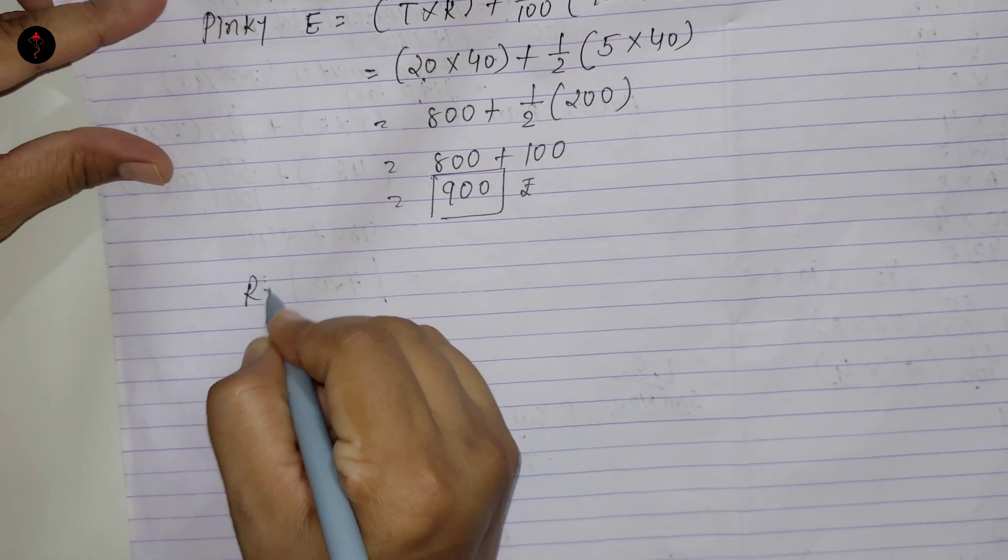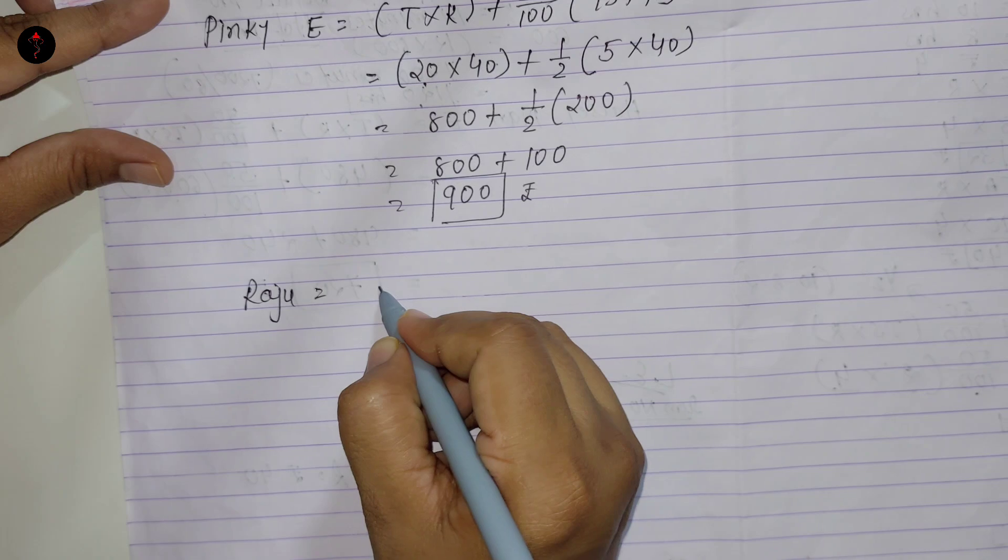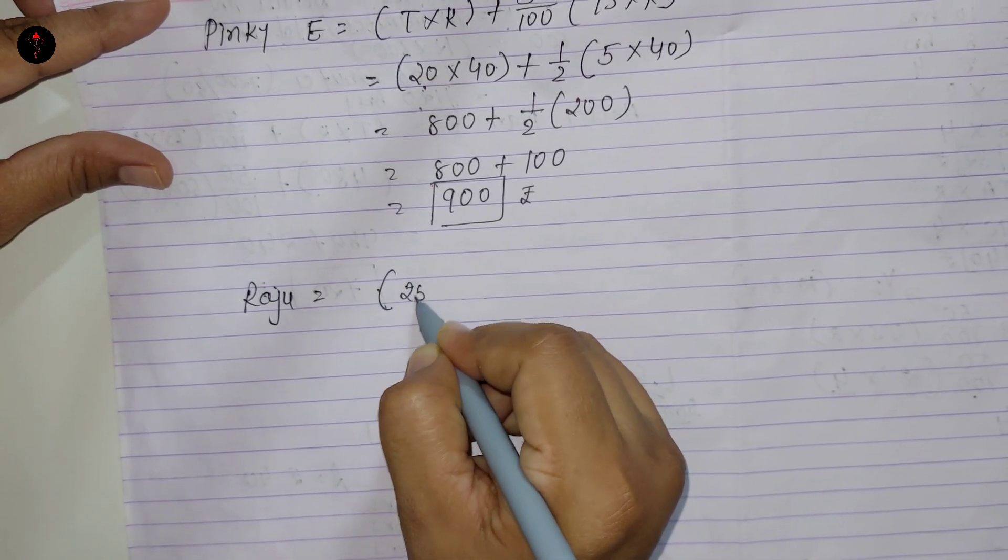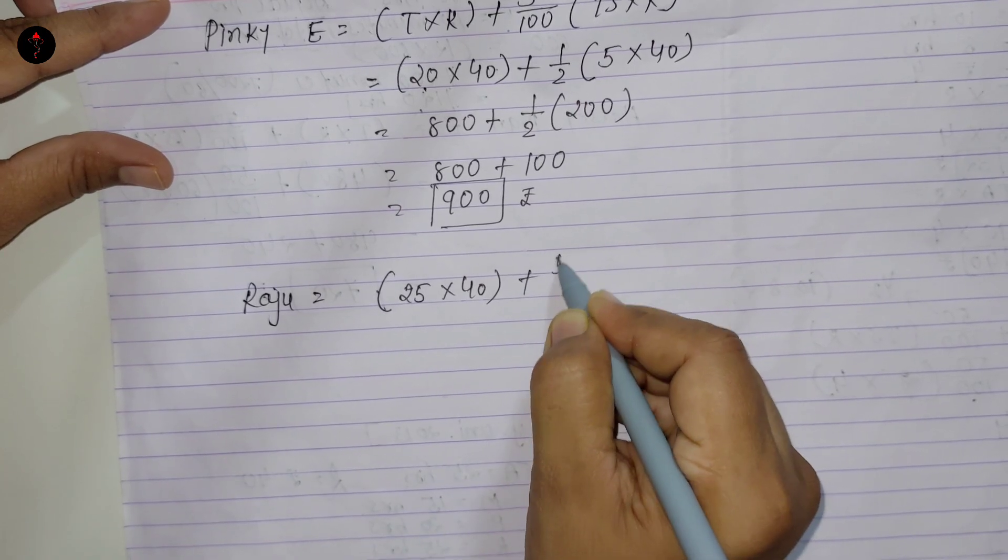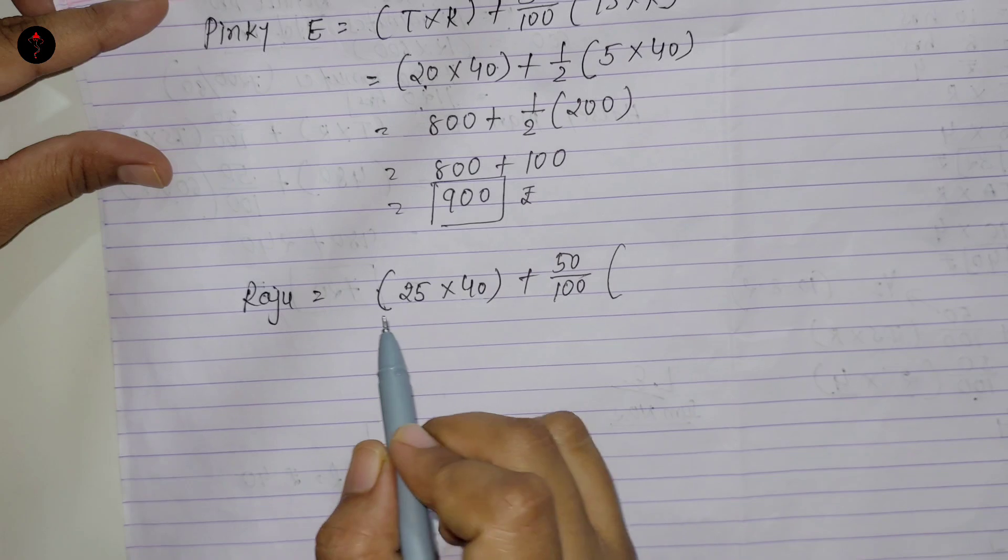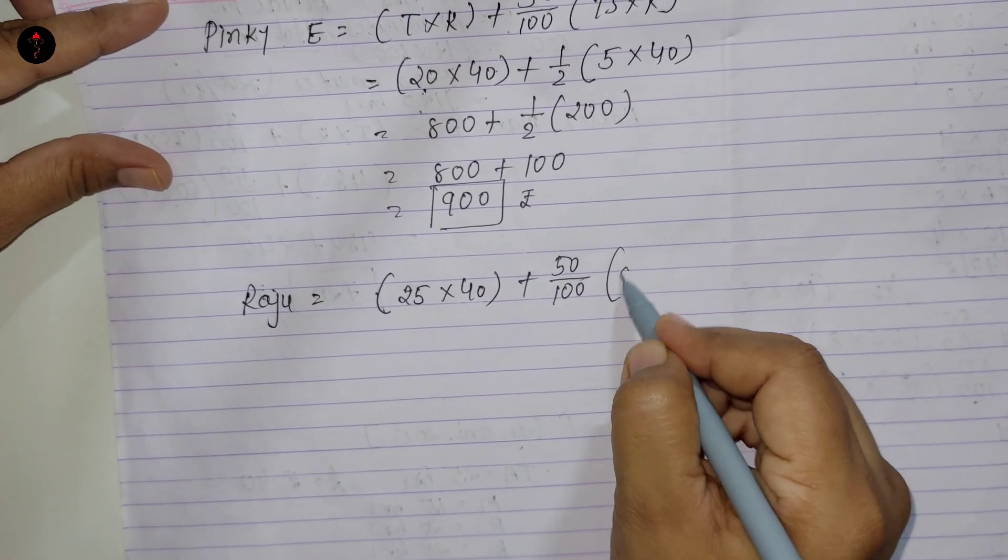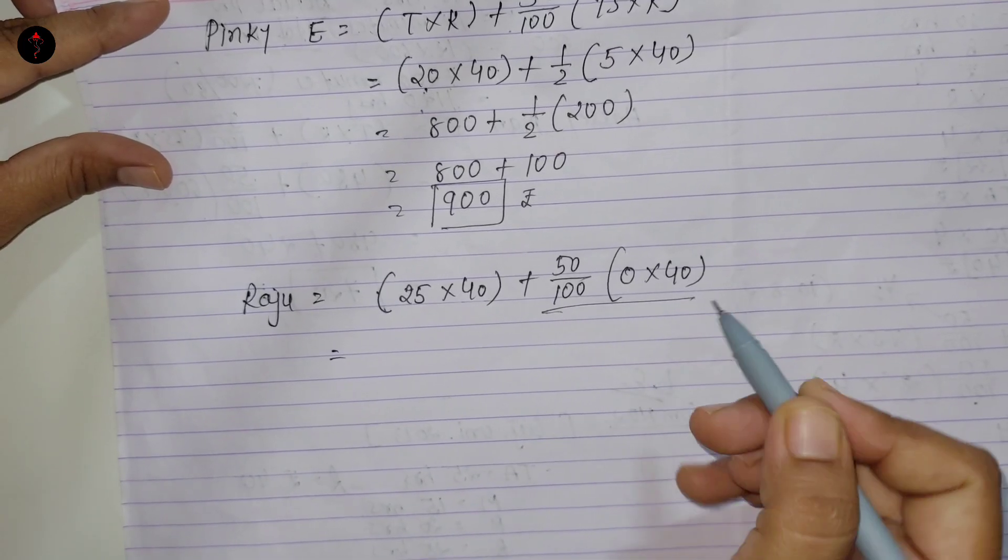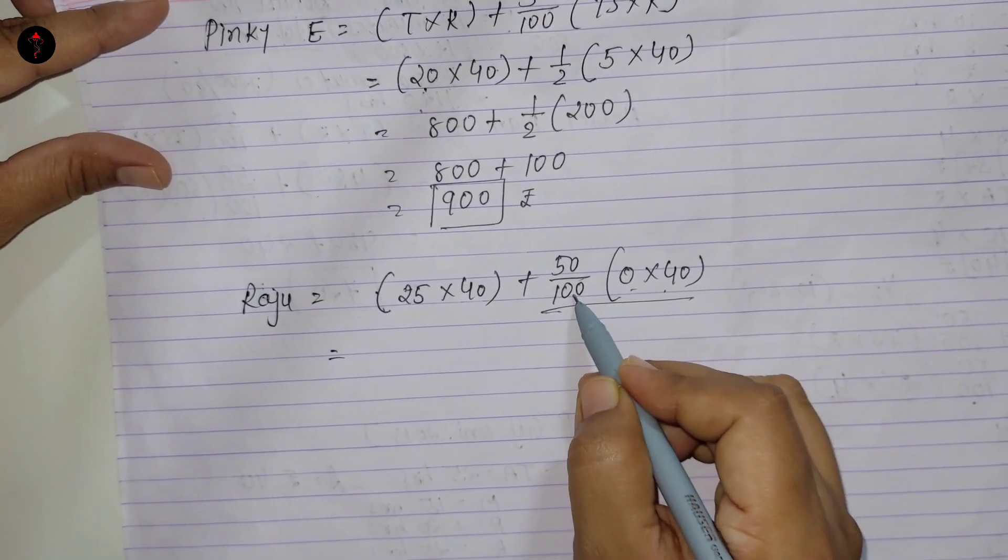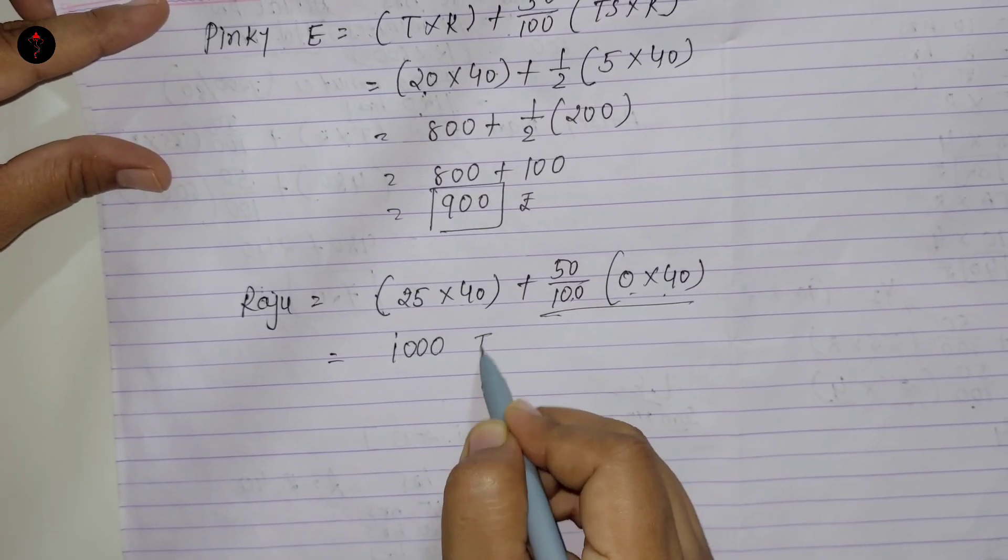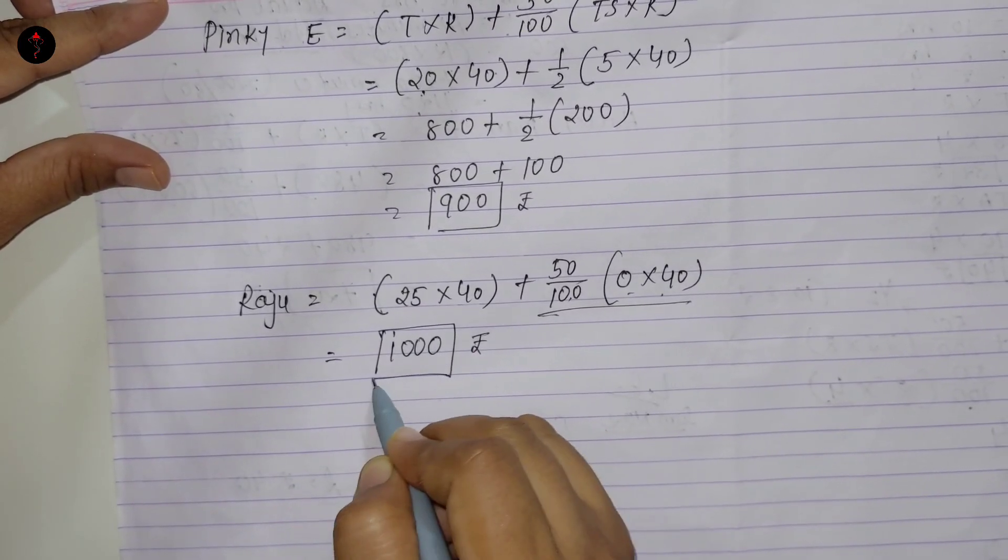For Raju, the formula is the same. Time taken is 25 into 40. Plus 50 percent of time saved, but time saved is zero since both time taken and time allowed are 25 hours. So this becomes zero. 25 into 40, your answer is Rs. 1000.